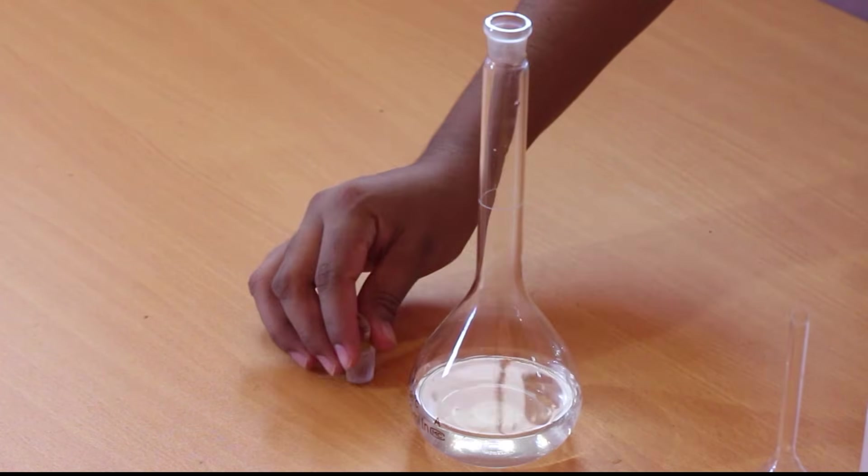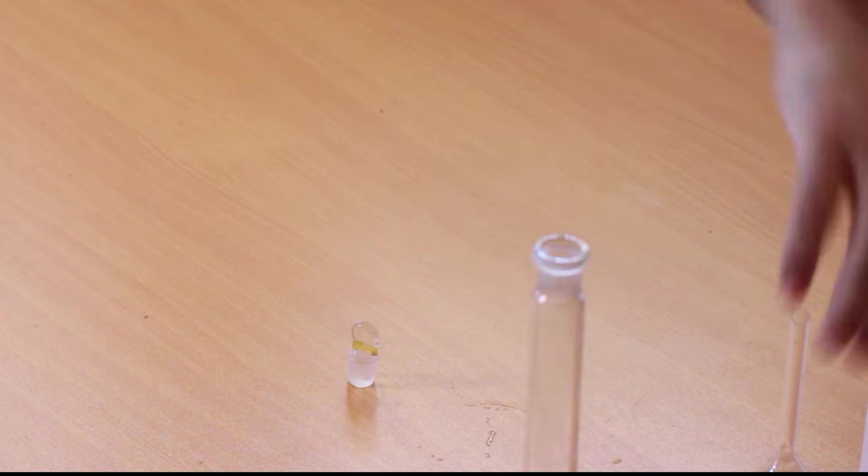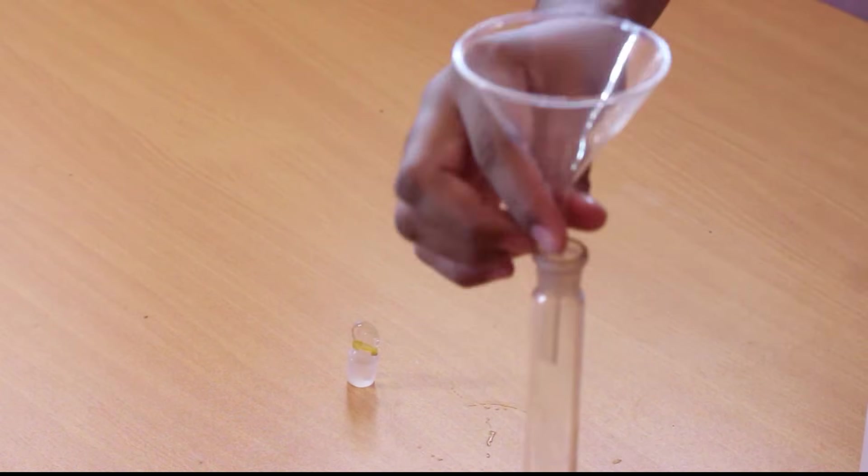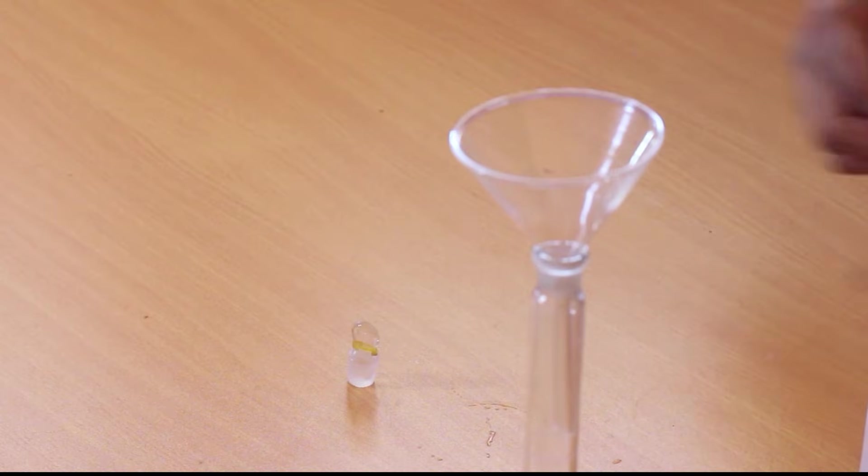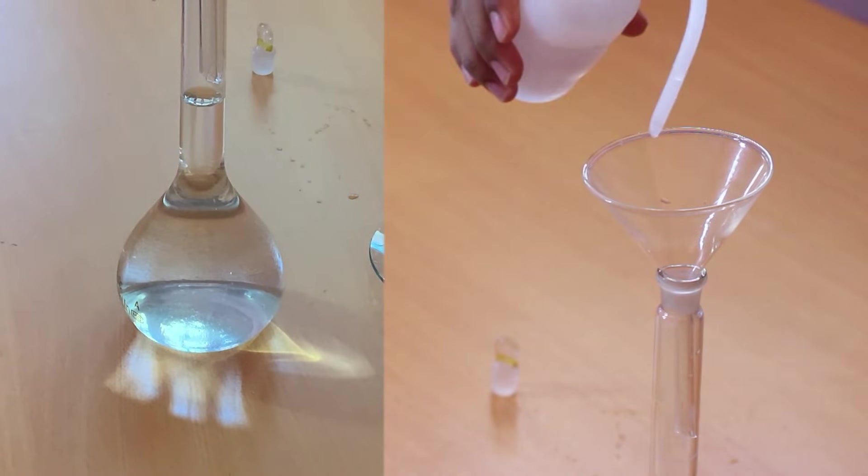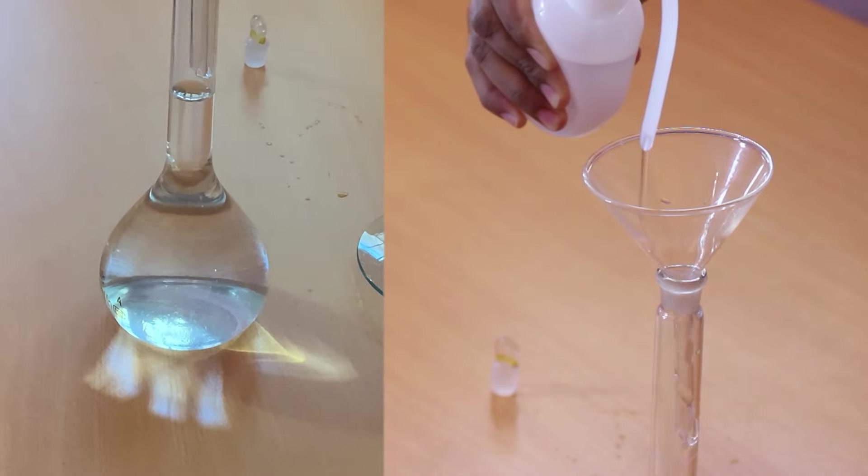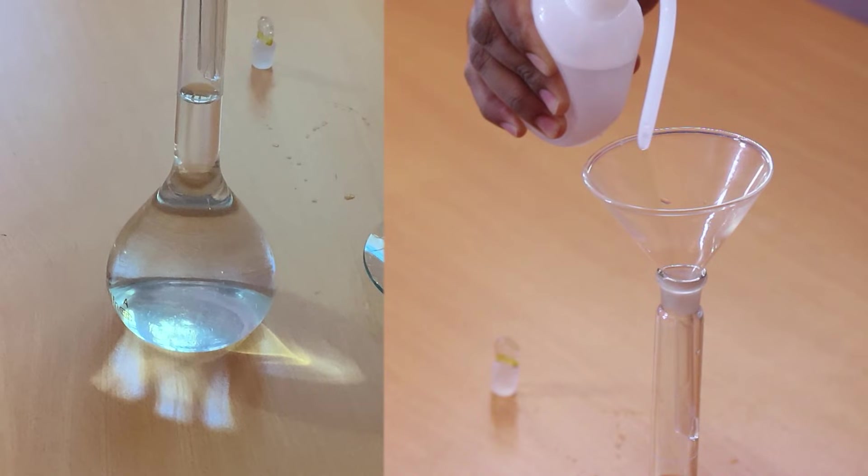Now we remove the lid of the volumetric flask and put the funnel so that we can fill the solution with water until we reach the mark on the volumetric flask. When the water level reaches the mark of the volumetric flask, we need to be careful regarding the water meniscus.